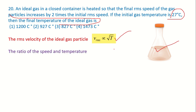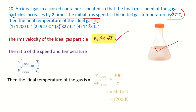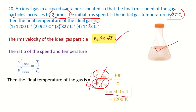Taking the ratio: V1²/V2² = T1/T2. V2 is given as 2 times V1, so V2² = 4V1². Cancelling V1², we get 1/4 = 300/X, where T1 = 300 K (converting 27°C). Therefore X = 300 × 4 = 1200 Kelvin.